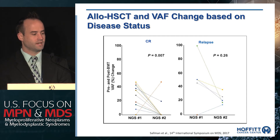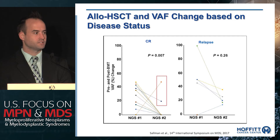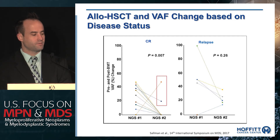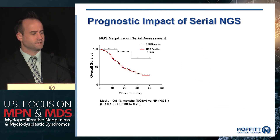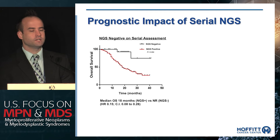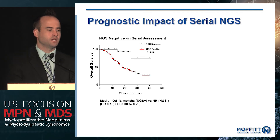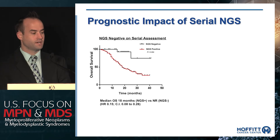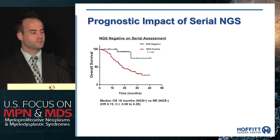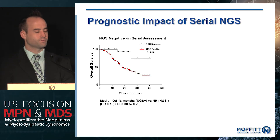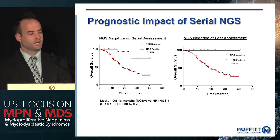As expected, patients in remission post-transplant lose their mutations, which aligns with our goal of curing these patients. Every patient who relapsed post-transplant had the presence of clonal hematopoiesis at the time of relapse. Importantly, both patients who were NGS-positive following transplant ultimately relapsed and died of their disease. Patients who became NGS-negative at any point over the course of treatment had significantly better prognosis — median survival not reached versus only 18 months in persistently NGS-positive patients.